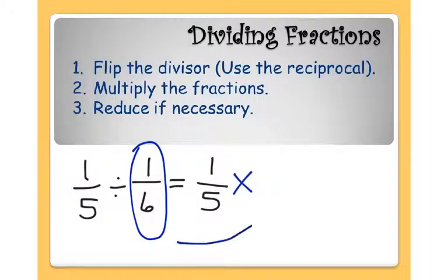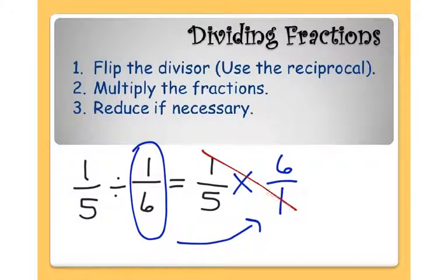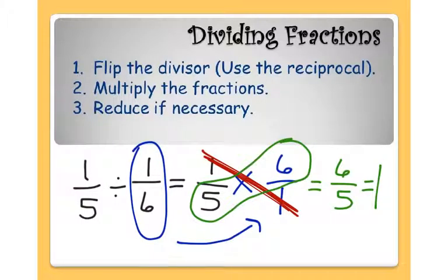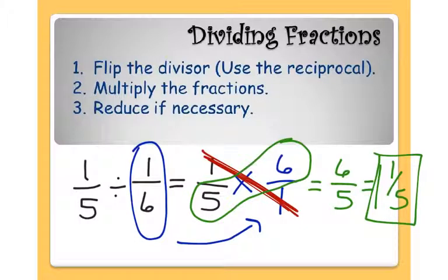So instead of the 6 being my denominator, the 6 is going to be my numerator. Instead of the 1 being the numerator, that's going to be my denominator. And now I multiply. In this example, I see that diagonally the 1's cancel each other out, so I'm just looking at 6 fifths as my answer. I can't leave it as an improper fraction, so it's 6 divided by 5. Well, 5 goes into 6 one full time with 1 fifth left over, so my answer to 1 fifth divided by 1 sixth is 1 and 1 fifth.